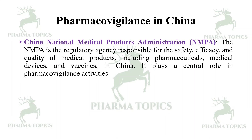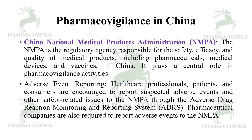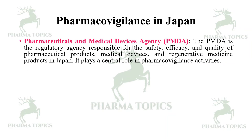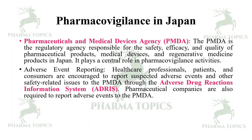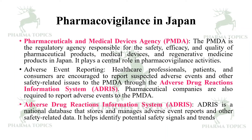In China, the National Medical Products Administration (NMPA) is the regulatory agency that plays a major role in pharmacovigilance activities. The NMPA works through the Adverse Drug Reaction Monitoring and Reporting System, and pharmaceutical companies are required to report adverse events to the NMPA. In Japan, the Pharmaceuticals and Medical Devices Agency (PMDA) is responsible for the safety, efficacy, and quality of pharmaceutical products, medical devices, regenerative medicines, and other products. The PMDA works through the Adverse Drug Reaction Information System (ADRIS), and pharmaceutical companies are similarly required to report adverse events to the PMDA. ADRIS is a national database that stores and manages adverse event reports and other safety-related data to identify potential safety signals and trends.